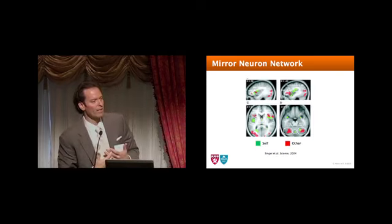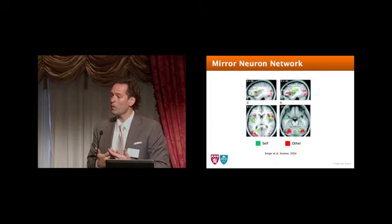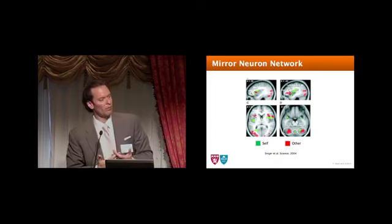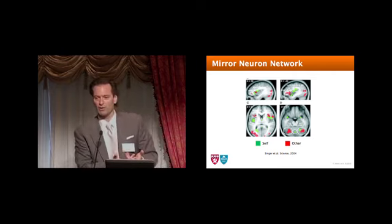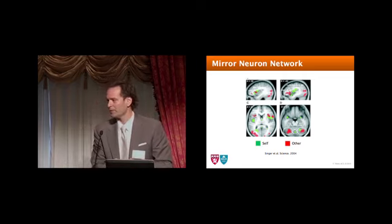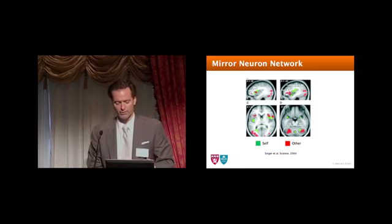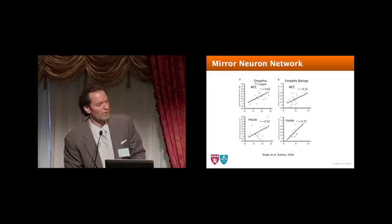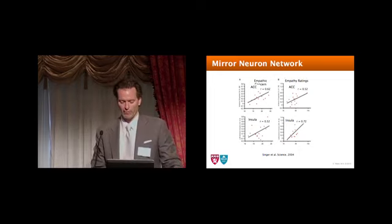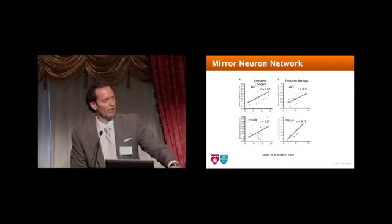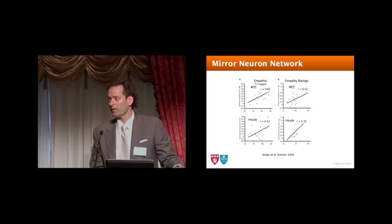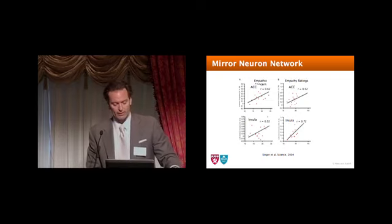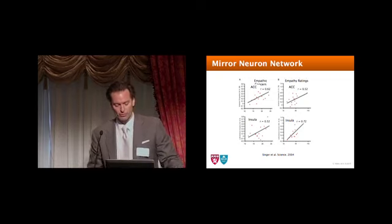And similarly, when we have pain, our pain network fires, and when we watch someone who's in pain, our pain network fires, not as strongly. And it turns out there's a difference between if we see someone we love or care about in pain, it's going to fire a lot stronger than if it's a stranger. It's almost a step function in terms of how we relate to each other. So the more familiar we are with someone, the more we trust someone, the more empathy we're going to have with them. And there are correlations with areas in the brain and their activity and people's empathic ability. So some people are just more empathic than others.